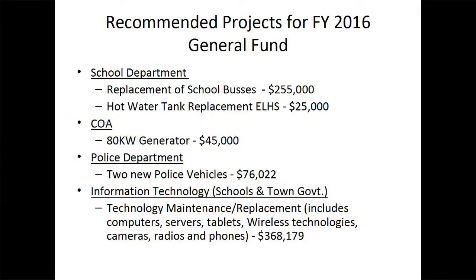Recommended projects for FY16 from the general fund include: school department replacement of school buses at $255,000, a hot water tank at the high school for $25,000, a Council on Aging 80-kilowatt generator for $45,000, two new police cruisers at $76,022, and information technology for schools and town government — all computers and equipment used throughout town — at $368,179.